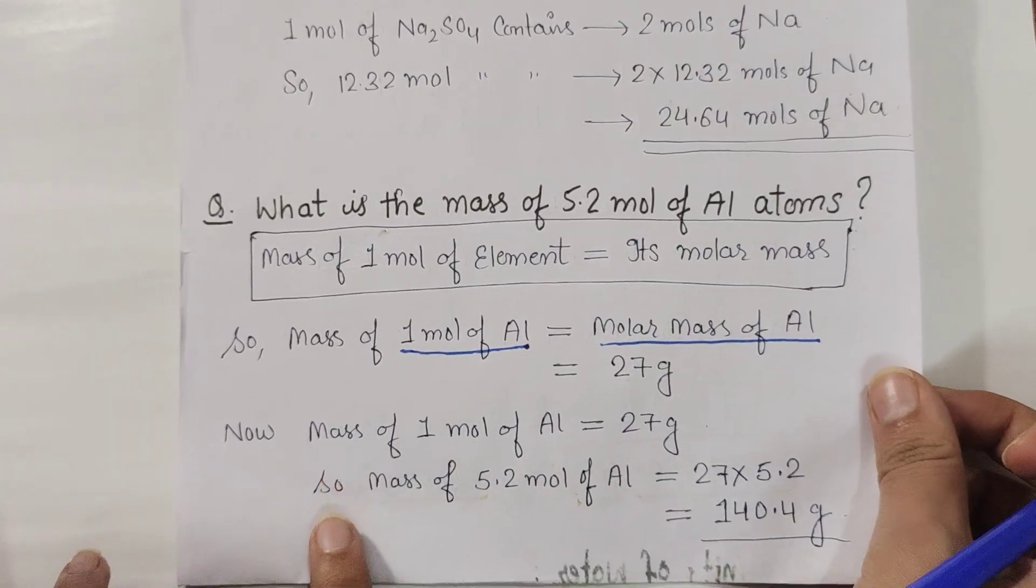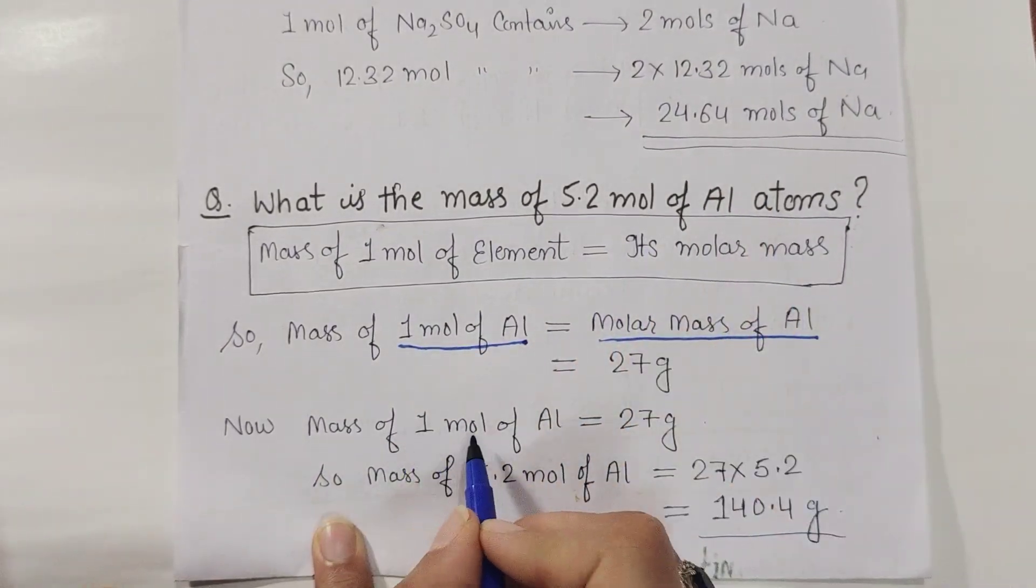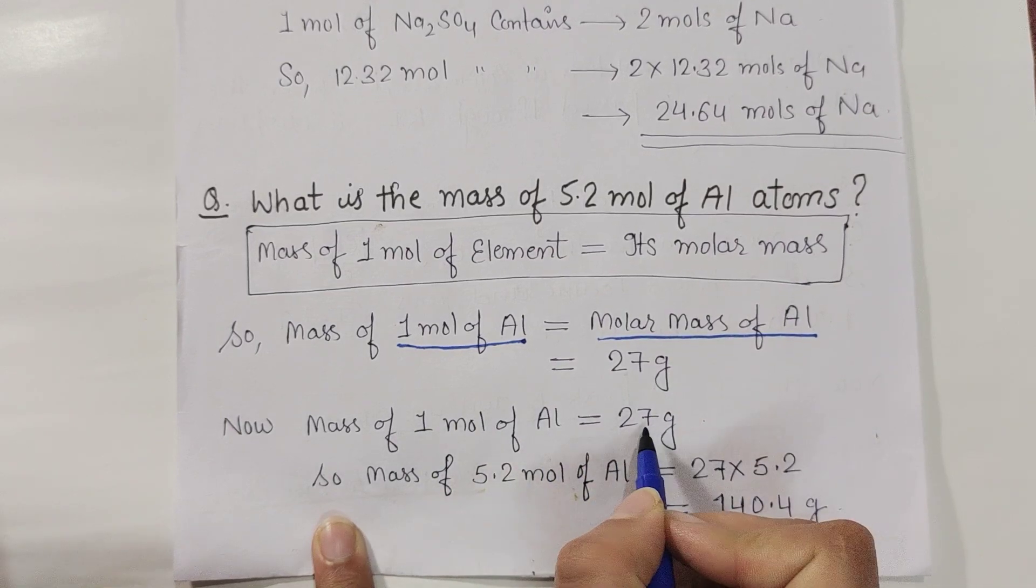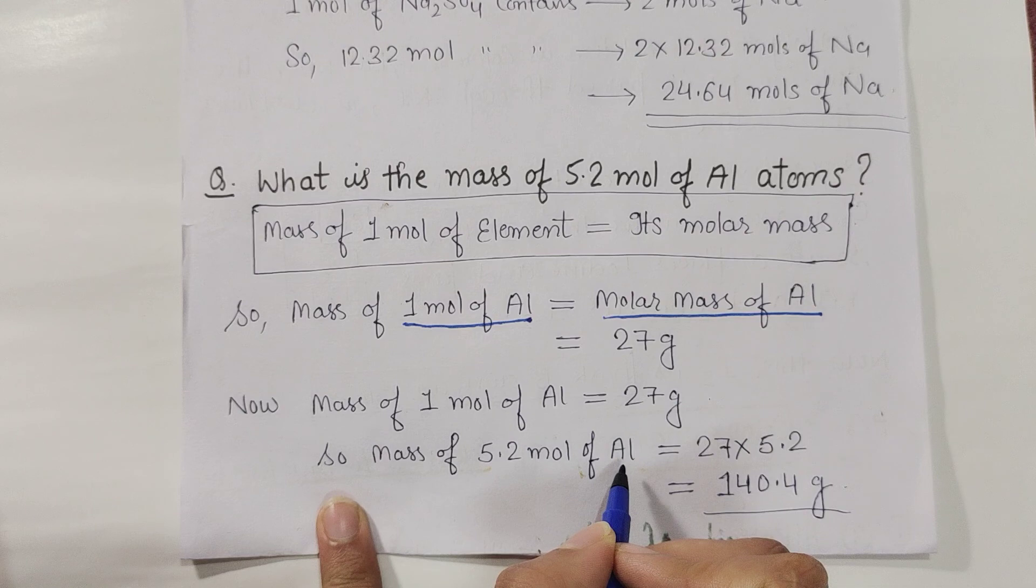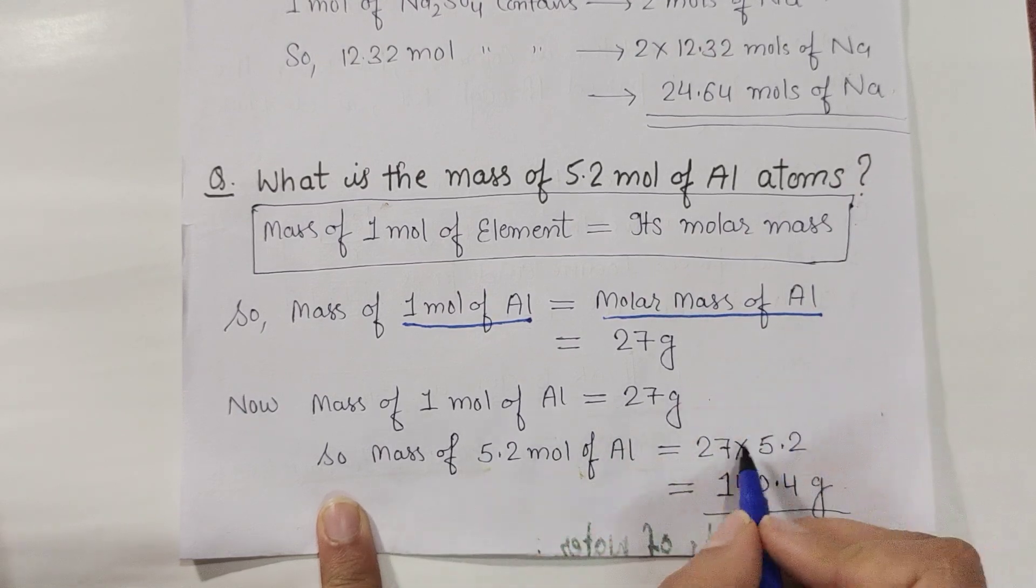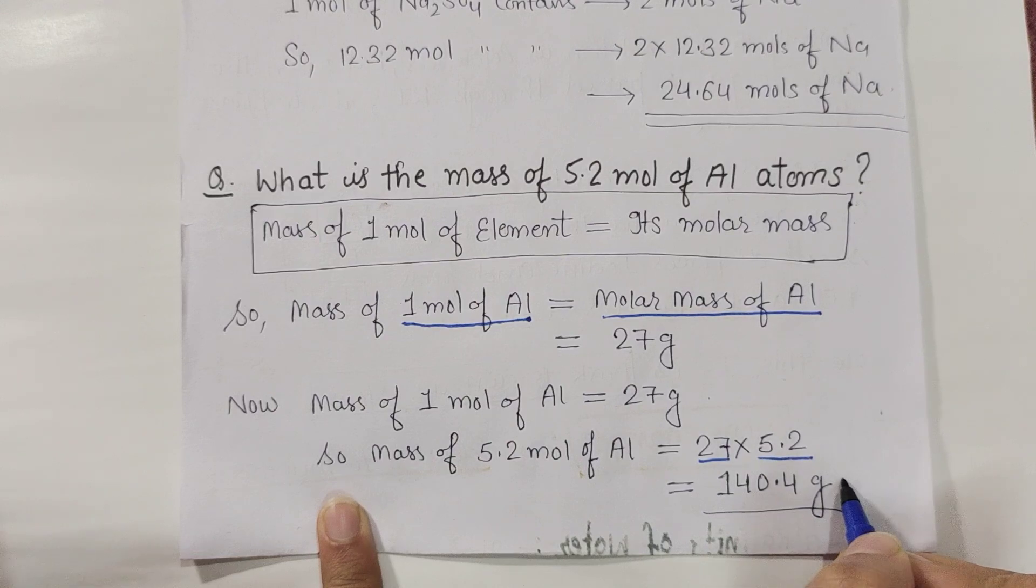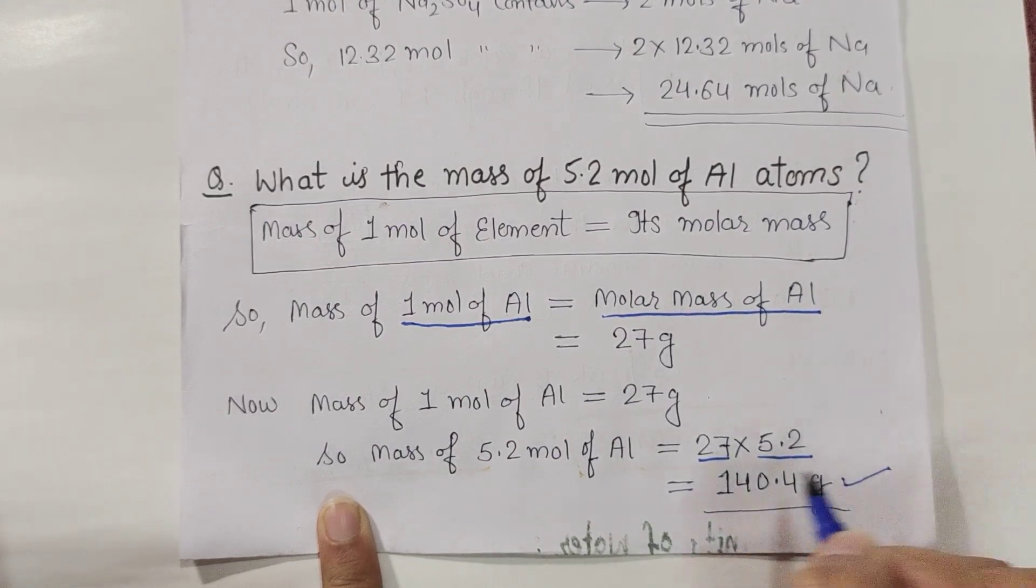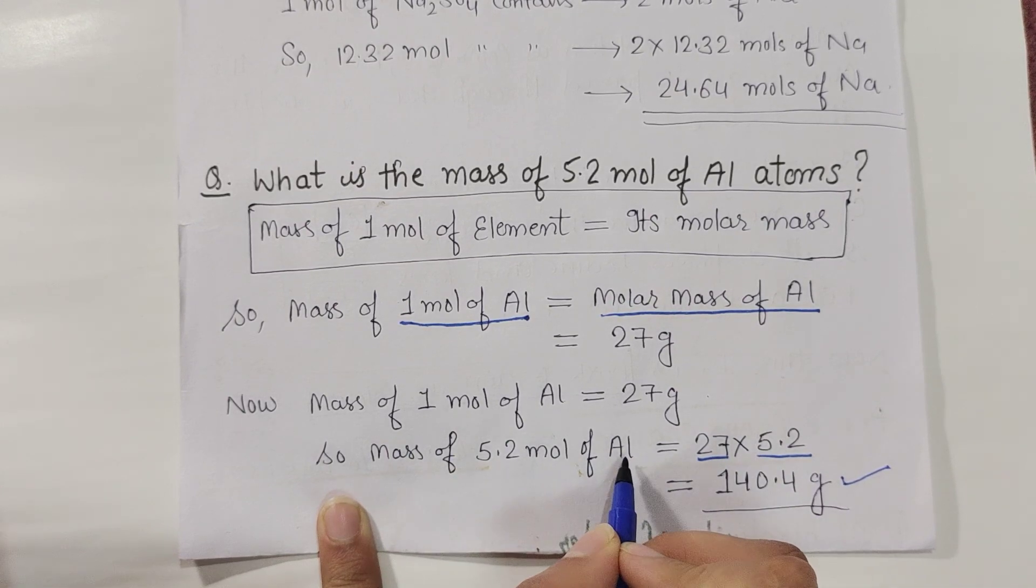And then now you have 5.2 mole of aluminium. So one mole of aluminium is 27 grams, so how much is 5.2 mole of aluminium? Using the unitary method, directly multiply them and we will get 140.4 grams of aluminium. That means 5.2 mole if we take aluminium, its mass is 140.4 grams.